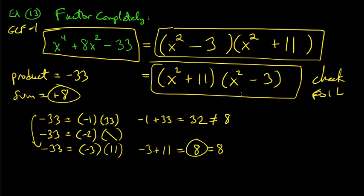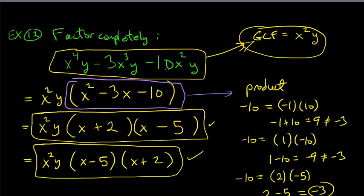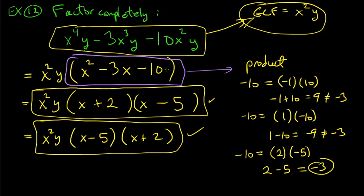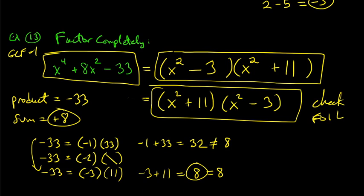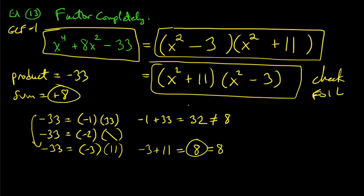If you're not convinced, verify by using FOIL — multiply it out and you should get x⁴ + 8x² − 33 back. So that's the last example for this video. We're not done with factoring though — in the next video we'll expand to trinomials where the leading coefficient is not necessarily 1, such as 3x² as the first term.